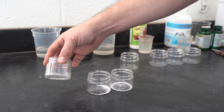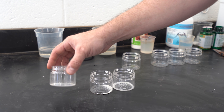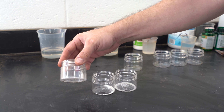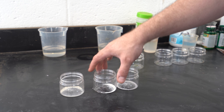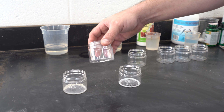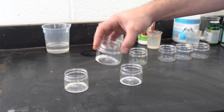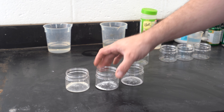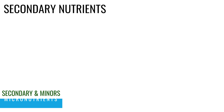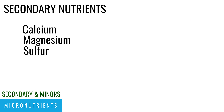The most common micronutrients in turf are centered around the ingredients that cause typically the largest color response: magnesium, manganese, zinc, and iron. But there are others, and some of these are called secondary nutrients — calcium, magnesium, and sulfur, for example.